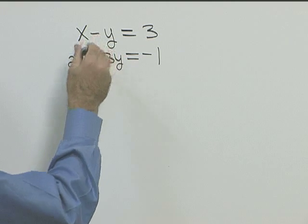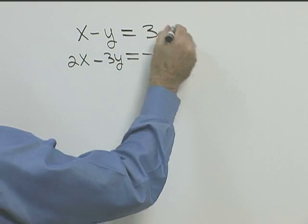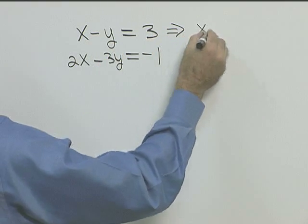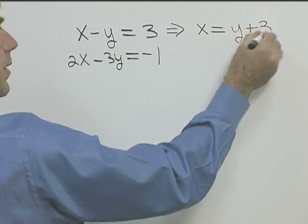For substitution we need to solve one of these equations for x or y. So let's take the first equation and solve it for x. Adding y to both sides we'll have x equals y plus three.